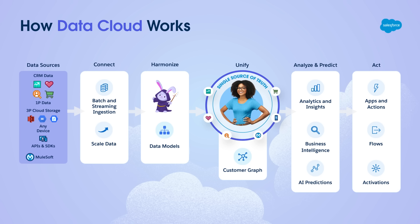After connecting all of your data from the numerous data sources, we must harmonize your data. We ingest and transform your data in streaming or batches. The challenge is that data coming in is not yet uniform — for example, users are called contacts in Sales and Service Cloud, subscribers in Marketing Cloud, and possibly something else in a connected legacy system. We use a variety of data models in Data Cloud to harmonize the data. After harmonizing, we use identity resolution to bring identities together and create a 360-degree view of each customer. Once this is done, you have a real-time unified profile that you can use with AI and BI tools for predictive insights such as AI models, recommendations, and data visualizations.